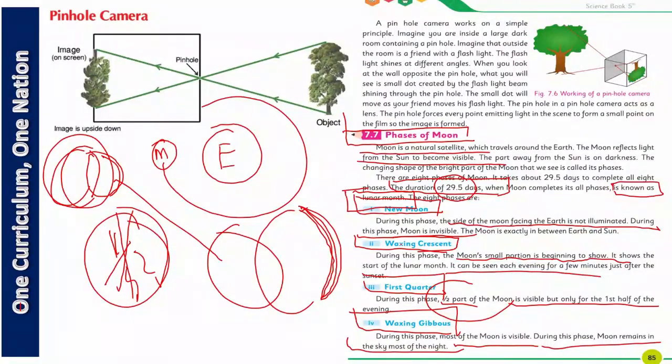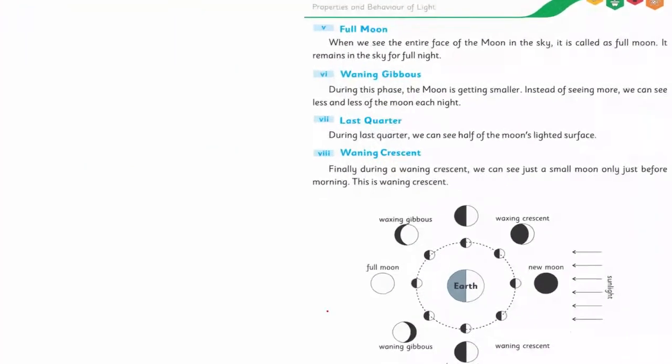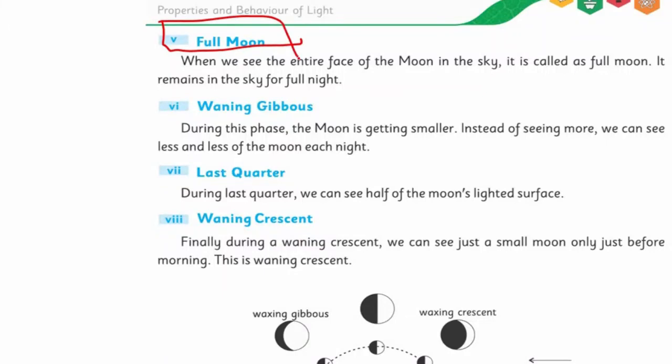After that comes full moon, which you all wait for. Chaudveen ka chaand, which is bright. When we see the entire face of the moon in the sky, it is called full moon and it remains in the sky for full night. And I remember, in the full night, we used to go out and play cricket. And you know, it's like being in a stadium with flood lights. This is how the full moon appears to us.